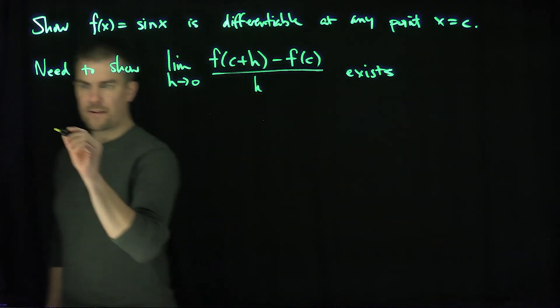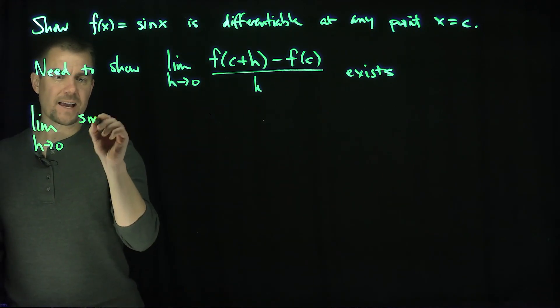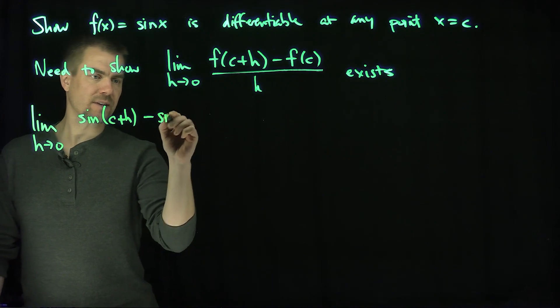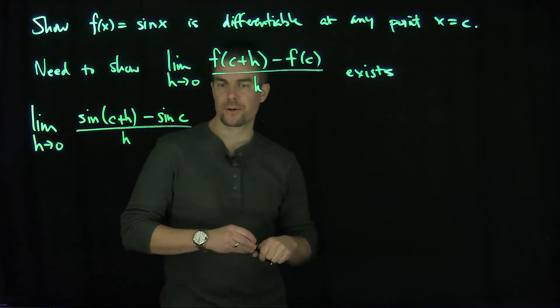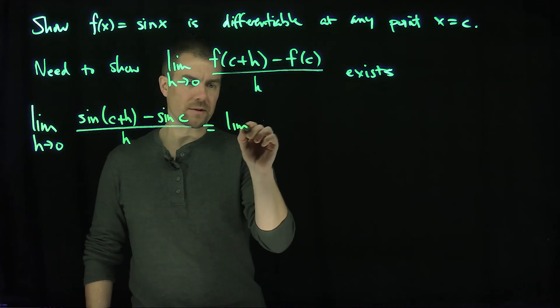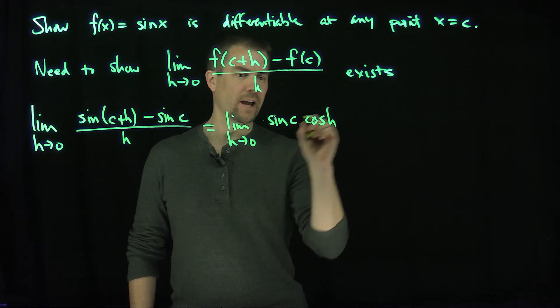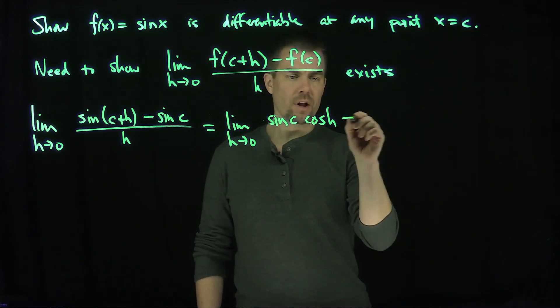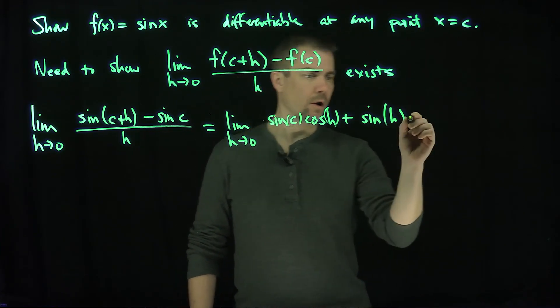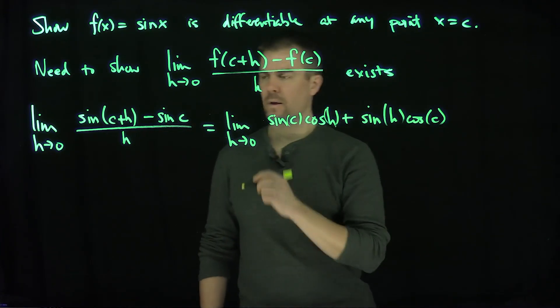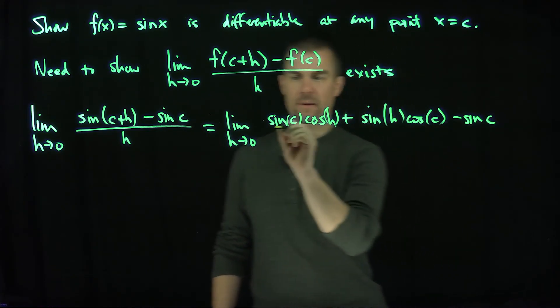Now we're going to fill in sine. So what I have here is the limit as h goes to zero of the sine of c plus h minus the sine of c all divided by h. Now I can use the angle addition formula for sine. This is the limit as h goes to zero of sine c cosine h plus cosine c sine h minus sine c all divided by h.